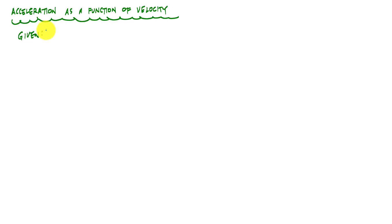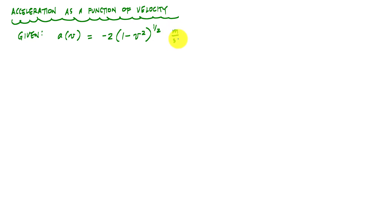We're given acceleration as a function of the velocity v, and the function is negative 2 times the quantity 1 minus v squared to the one-half power, in units of meters per second squared. Usually in these types of problems, all those constants have units associated with them — they're just given and told that the output would be in units of meters per second squared.